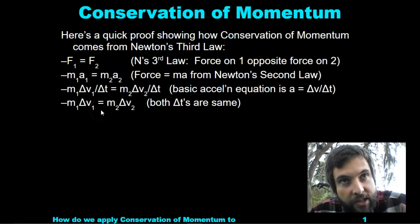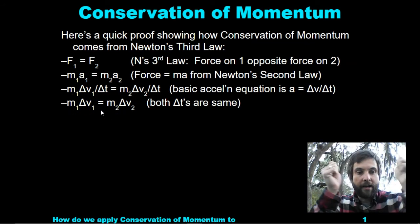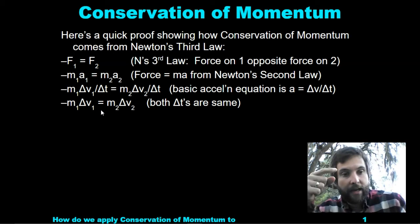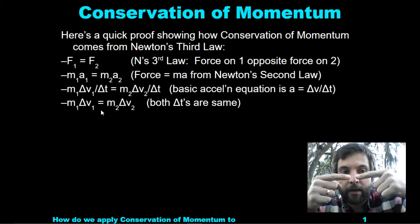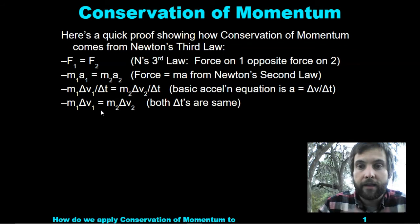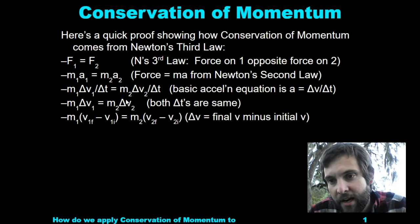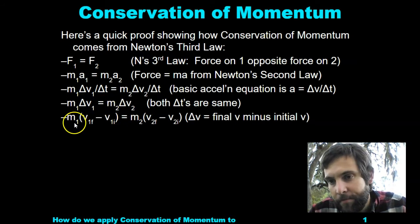Obviously for a collision, when two things collide, the time that A is pushing on B has to equal the time that B pushes on A — so both times are the same. That's why we're able to multiply time on each side, and we get M times delta V equals M times delta V.